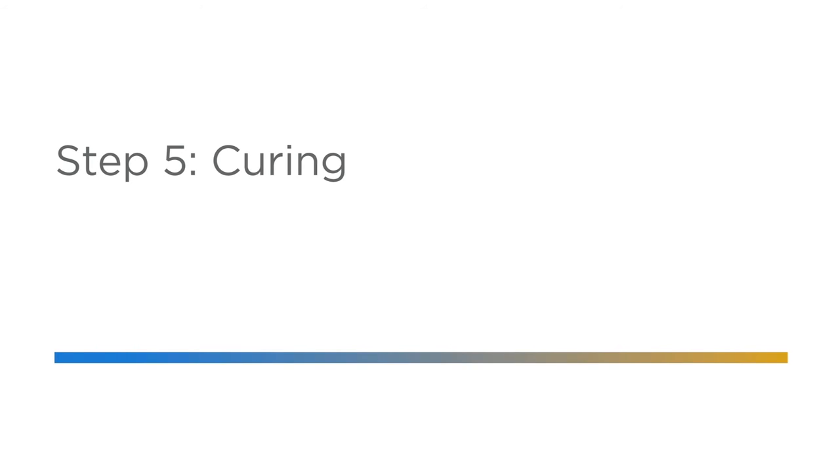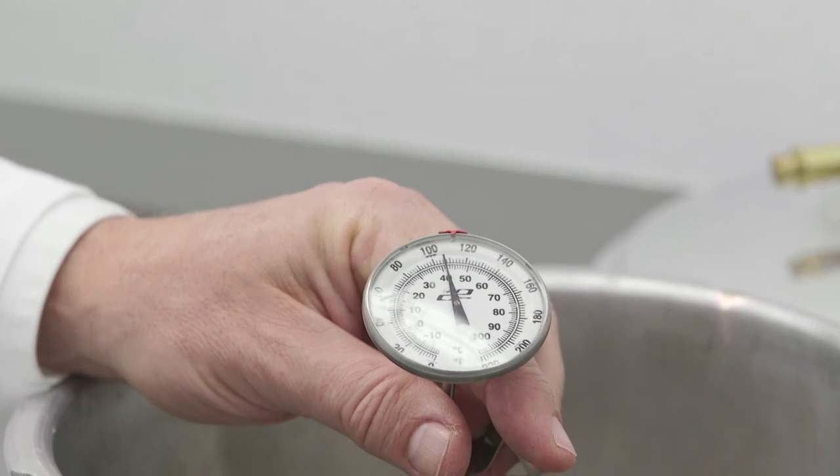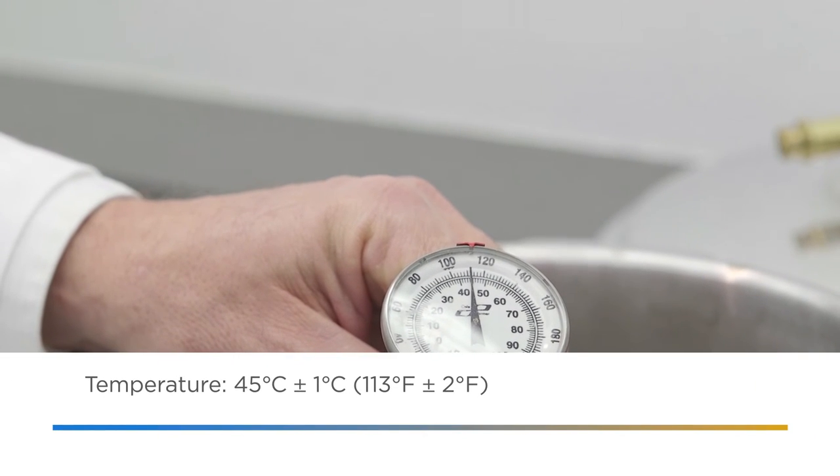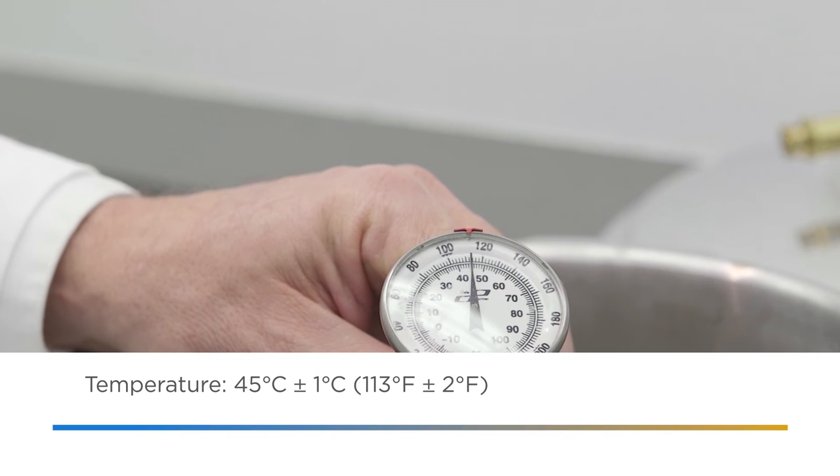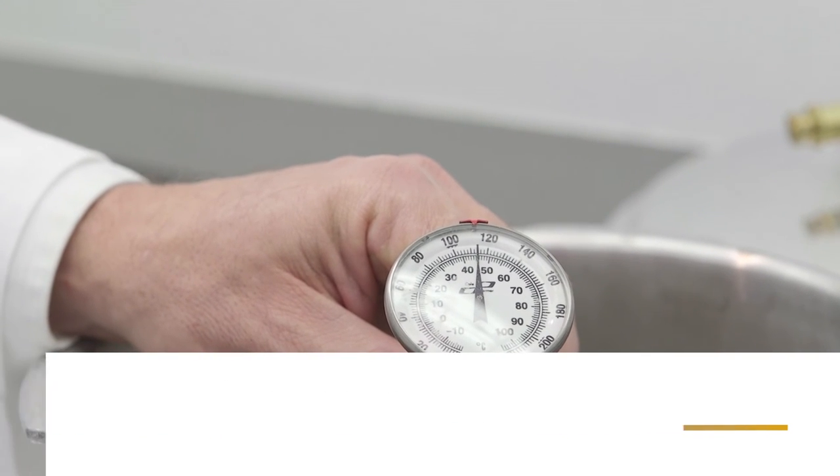Step 5 is curing. First, using an accurate thermometer, check the water temperature in the pressure pot and adjust to 45 degrees Celsius plus or minus 1 degree Celsius or 113 degrees Fahrenheit plus or minus 2 degrees Fahrenheit.